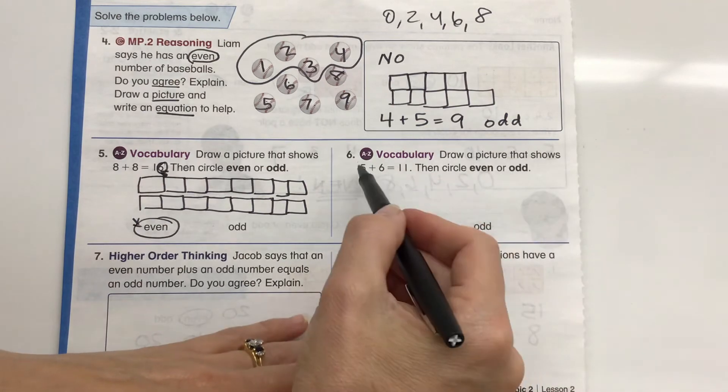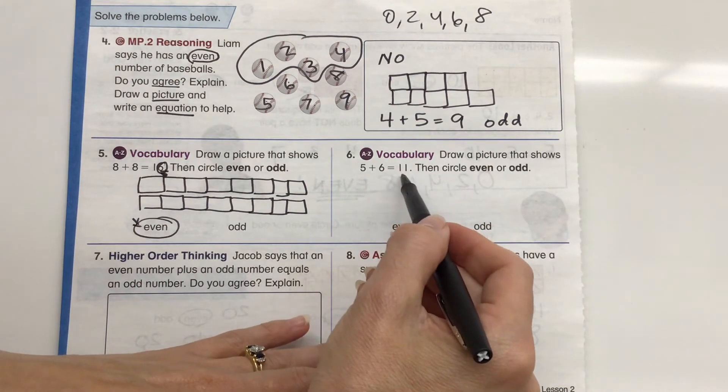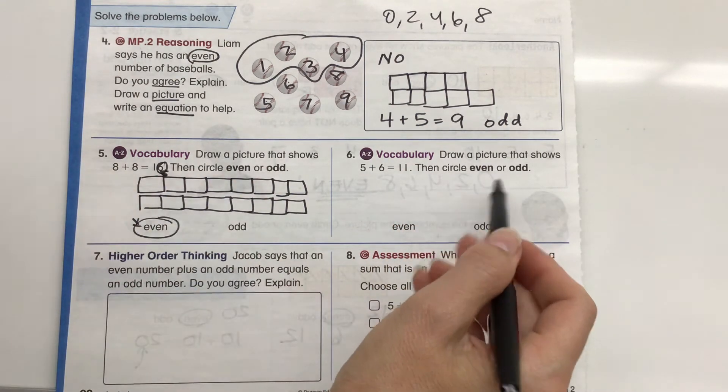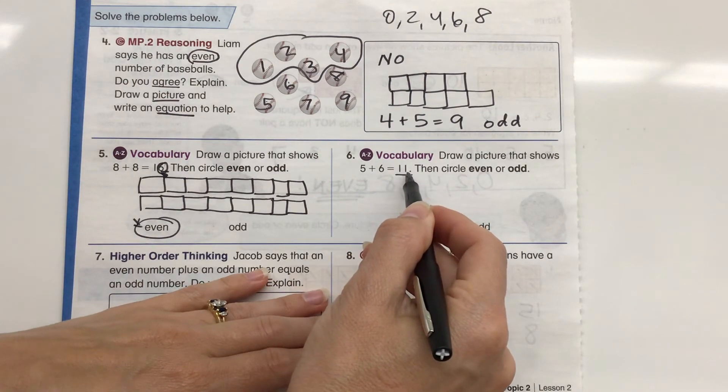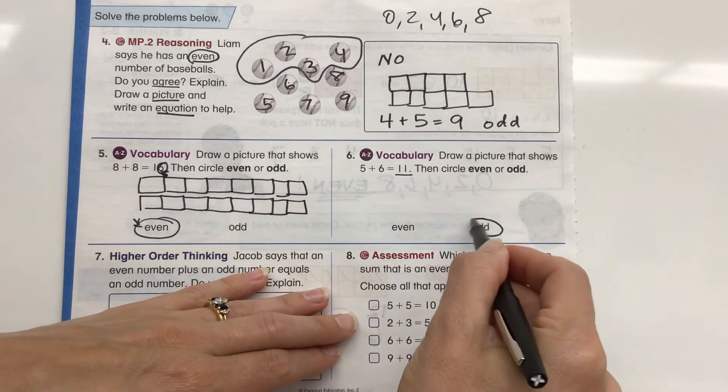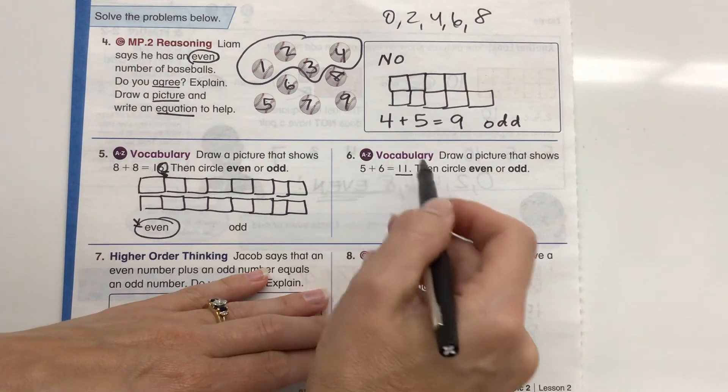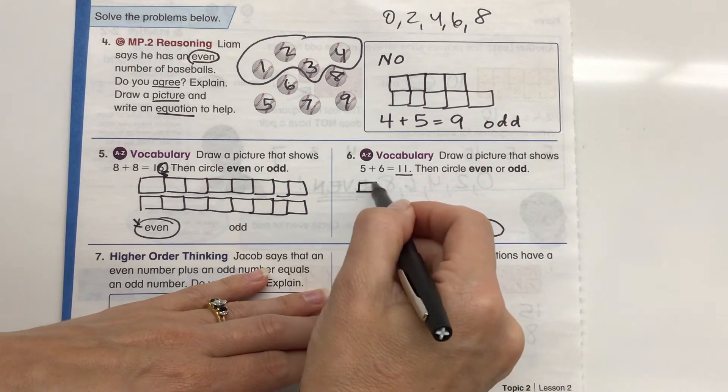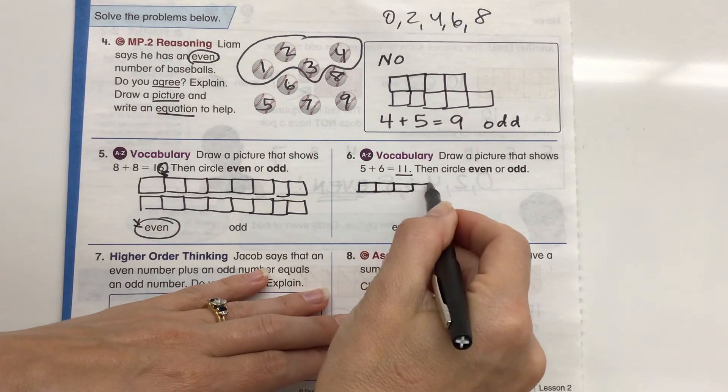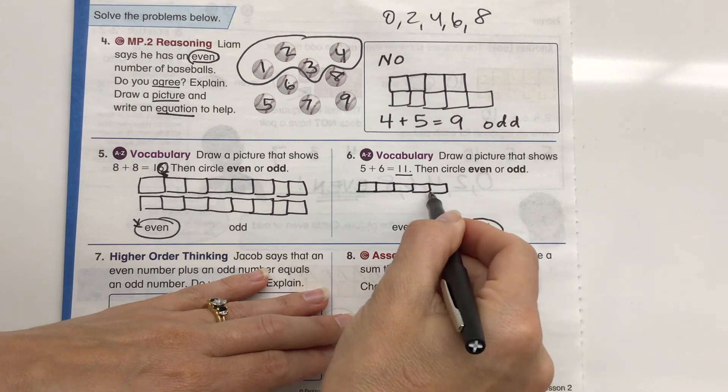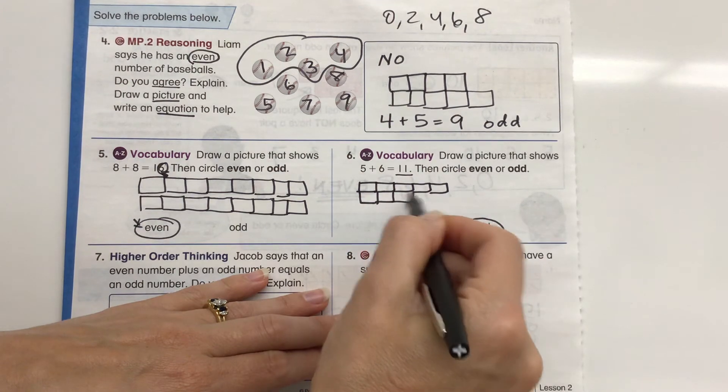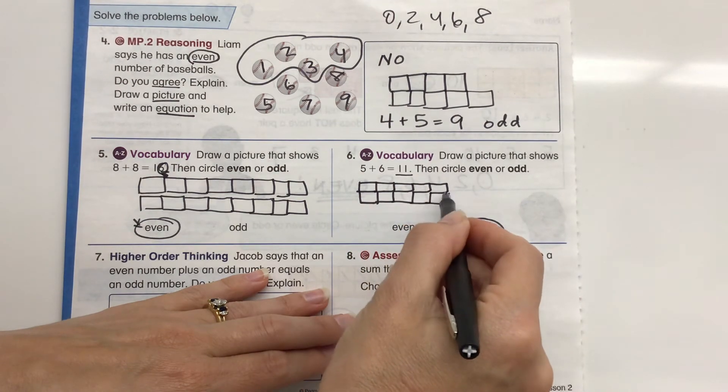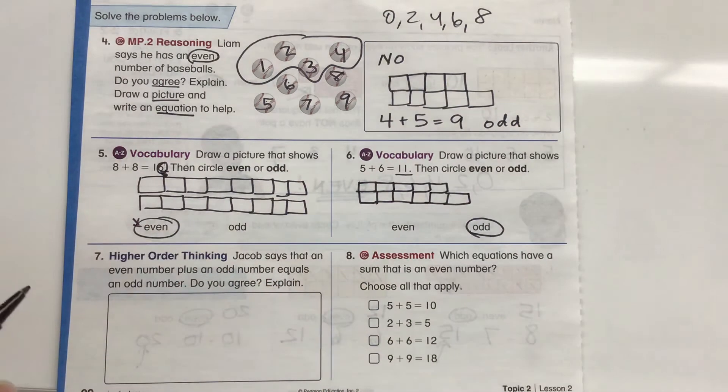Okay? Let's take a look at this one. Draw a picture that shows 5 plus 6 equals 11. Then circle even or odd. So I can look at the sum as 11. I've got a 1 there. A 1 is an odd number. So I already know it's going to be odd. Now I'm 1, 2, 3, 4, 5, plus 6. 1, 2, 3, 4, 5, 6.